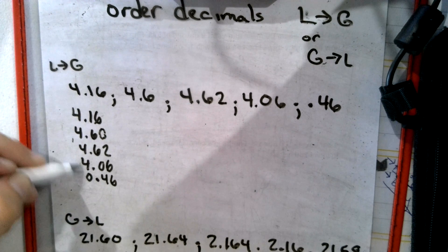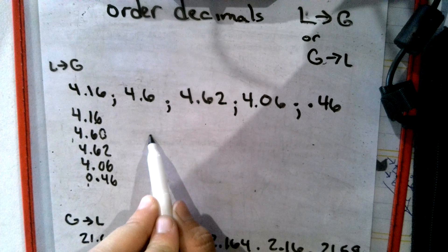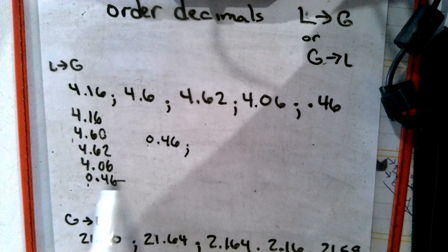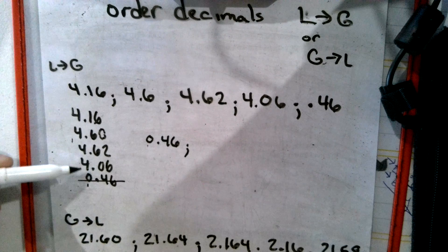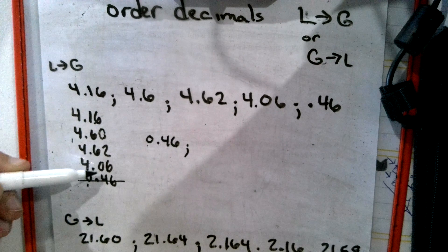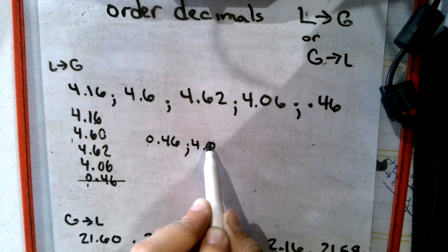There's 4, 4, 4, 4, 0, so our smallest one would be our zero. So then we would rewrite it as this is our smallest. Okay, so that one's gone. And then I would look here and I'd say 4, 4, 4, 4, and then I'd look to the next digit, 1, 6, 6, 0. Well, zero's our next smallest, so I'd put 4.06.